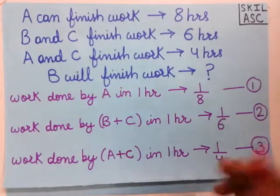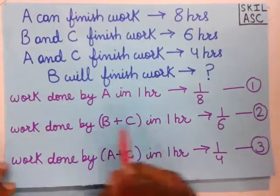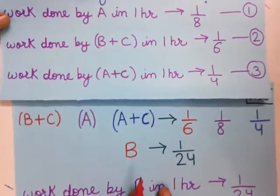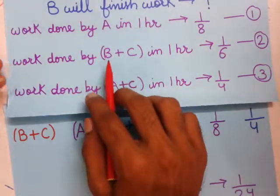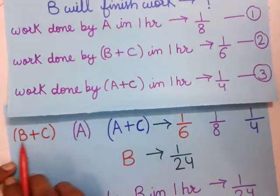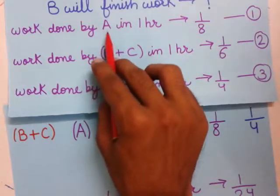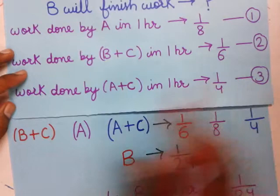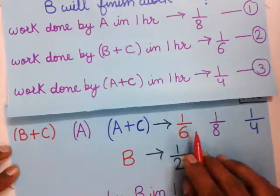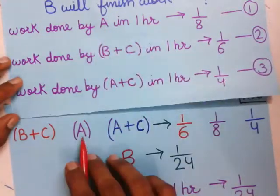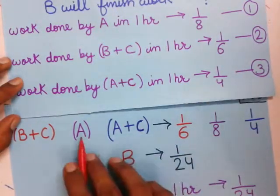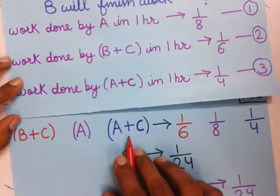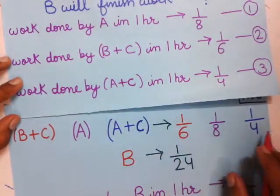Now we focus on the letters again. From the second statement, B and C gives 1 by 6. From the first statement, A gives 1 by 8. From the third statement, A plus C gives 1 by 4. I write B plus C equals 1 by 6, A equals 1 by 8, and A plus C equals 1 by 4 on the other side.